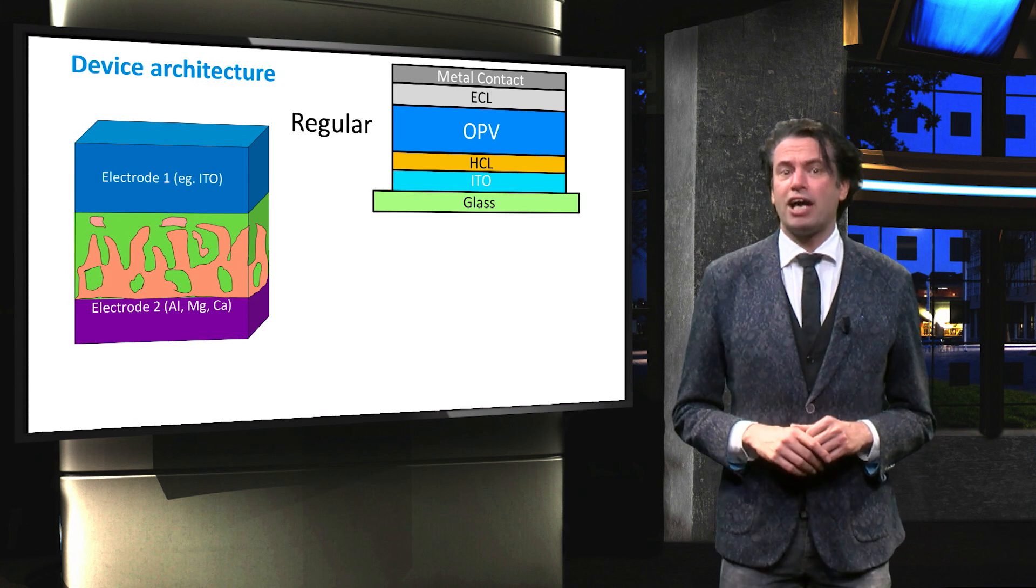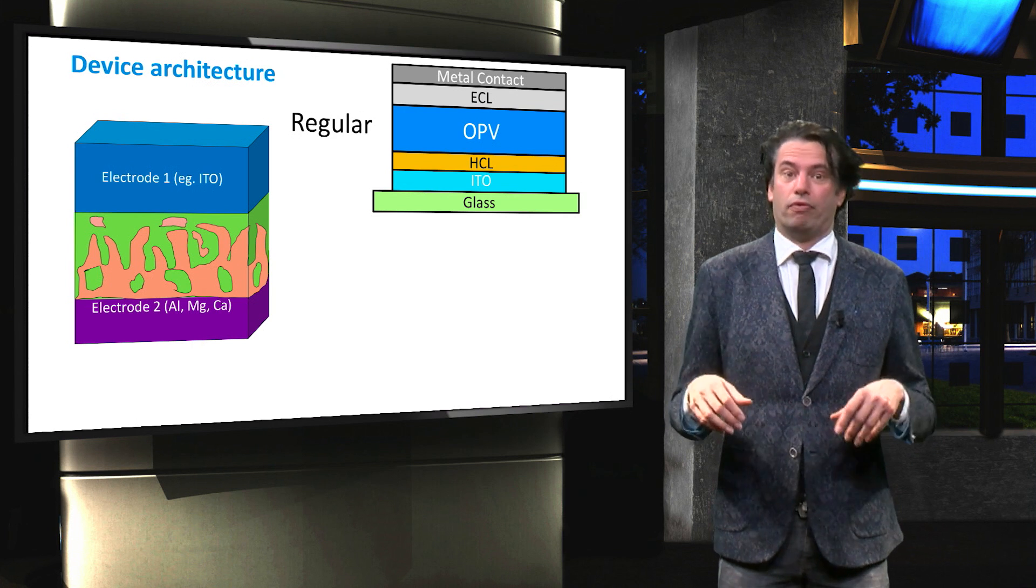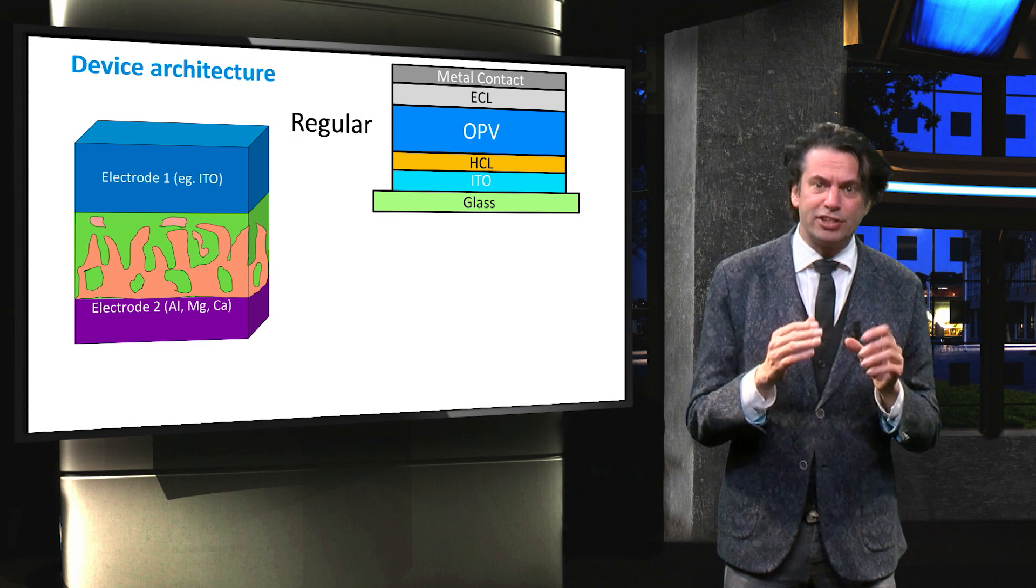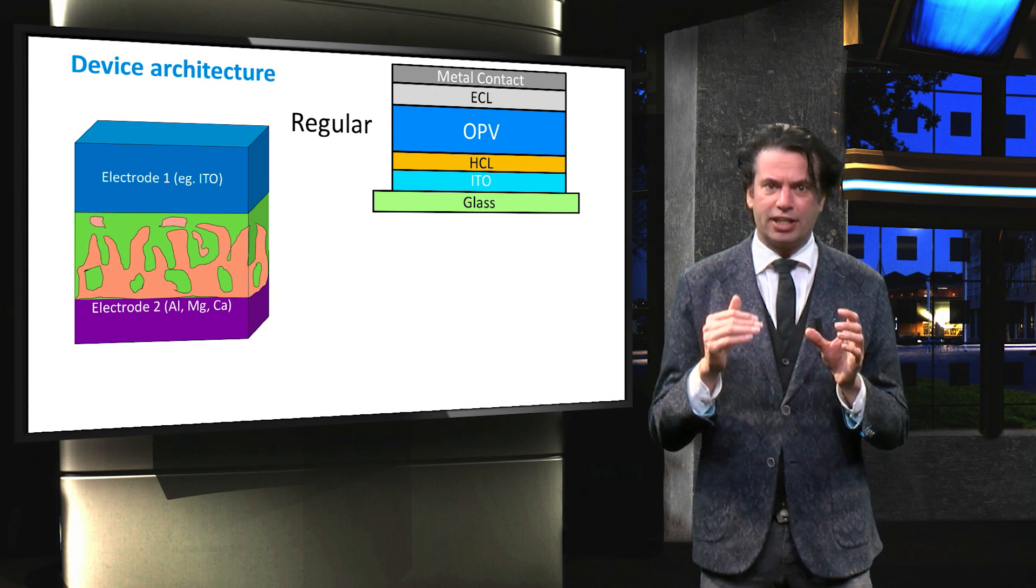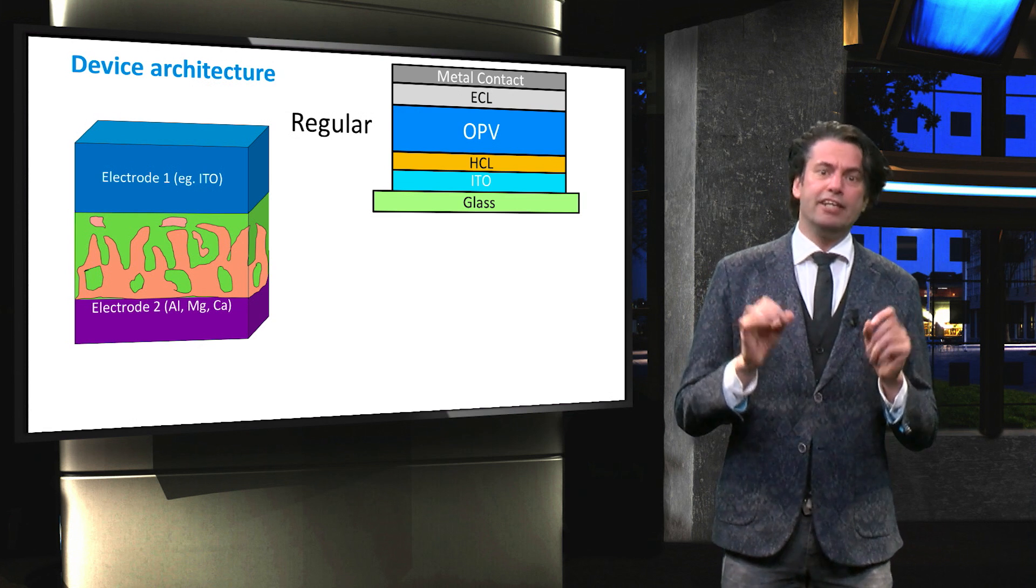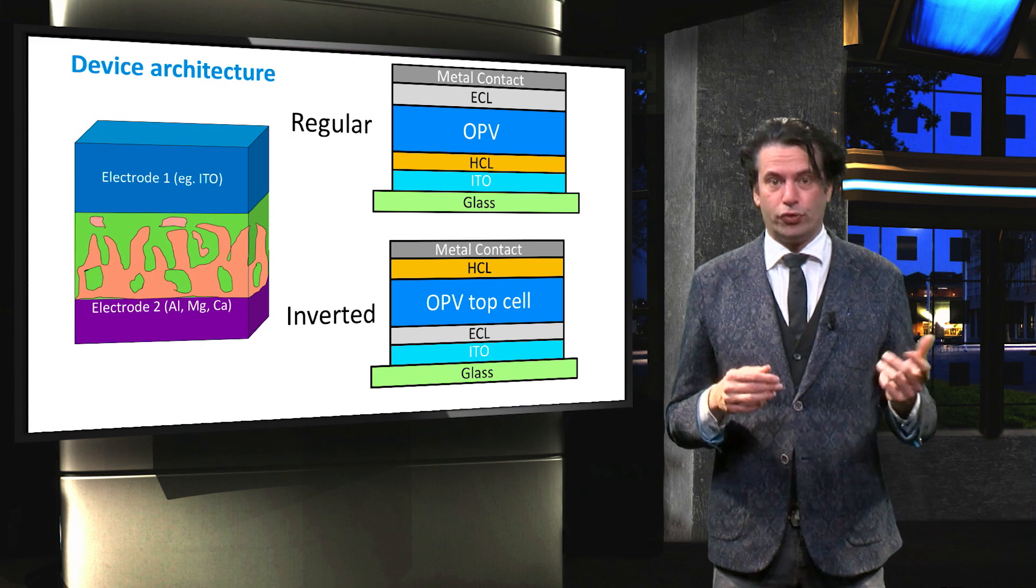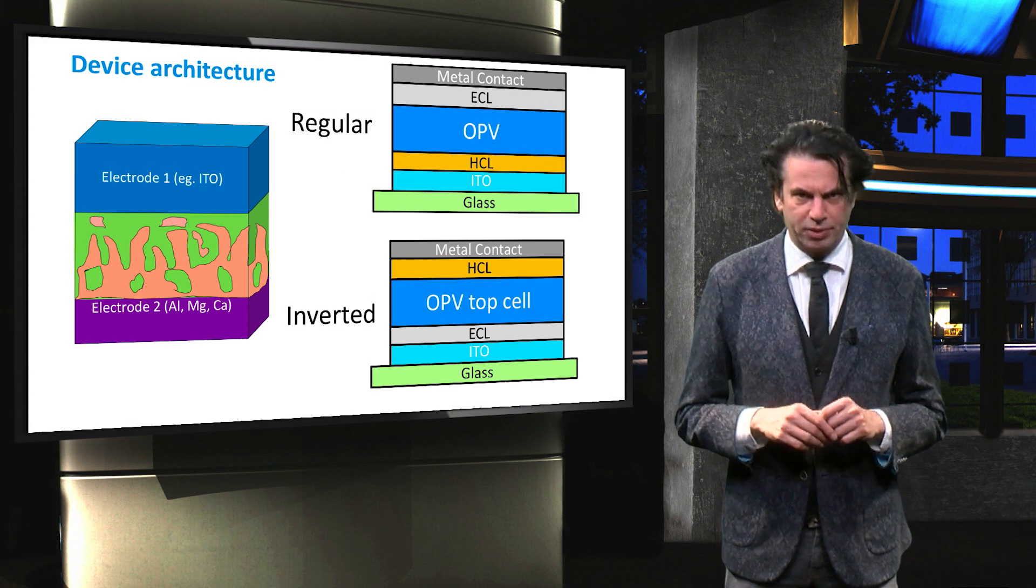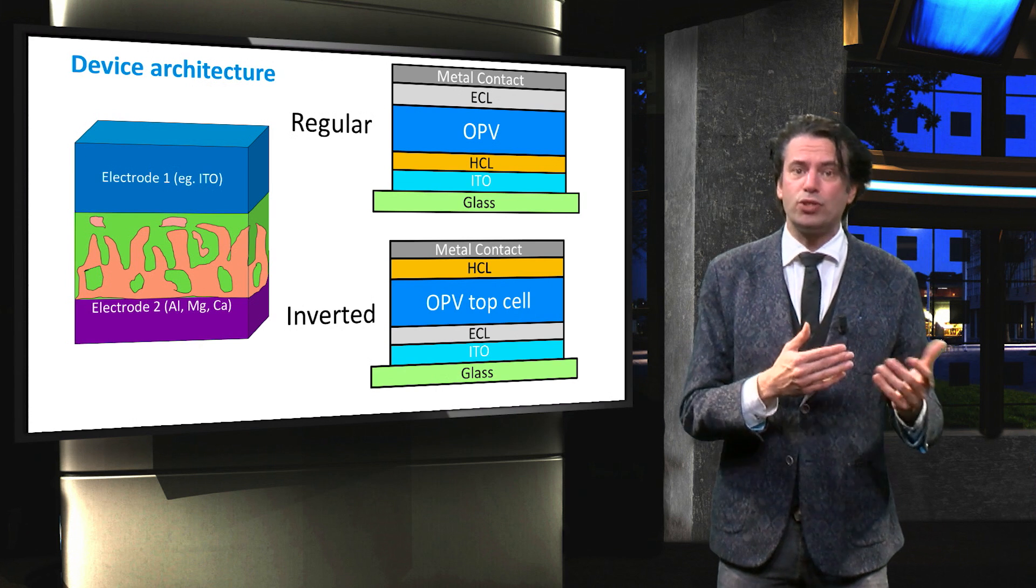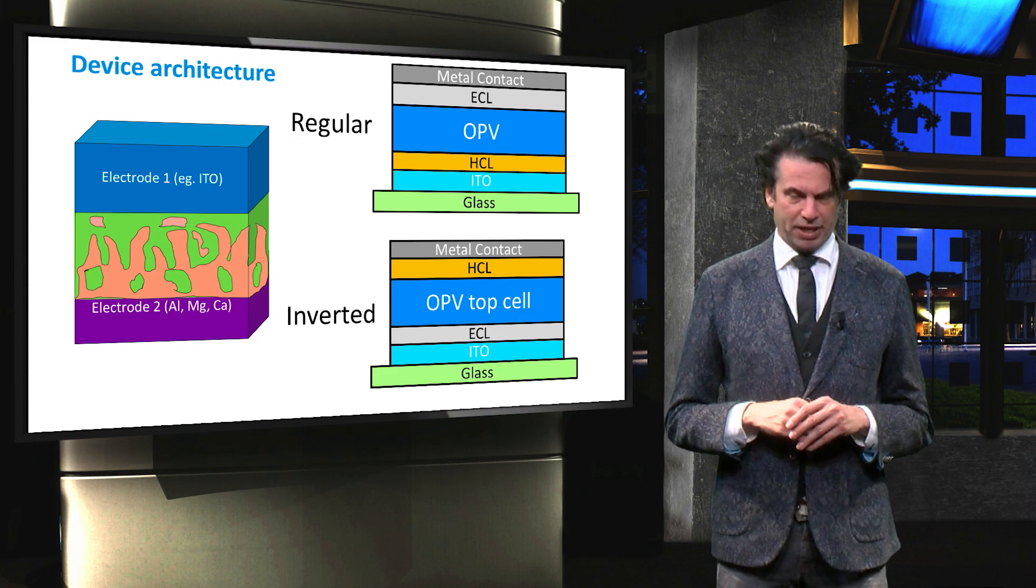Typical organic solar cells have two cell configurations. The first configuration is called the regular configuration, which means that the hole-collecting layer is the first processed layer on top of the glass ITO substrate. The inverted structure is when the electron-collecting layer is processed first on top of the glass ITO substrate. So the electrons have to be collected at the window-side where the light is entering the cell. The holes are collected at the back side.